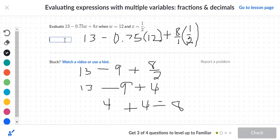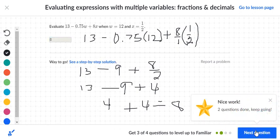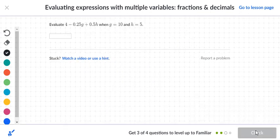Let's check this. It's correct. Let's move on to the next problem. Here we want to evaluate 4 minus 0.25g plus 0.5h. We're going to say 4 minus 0.25g. Notice g is 10.